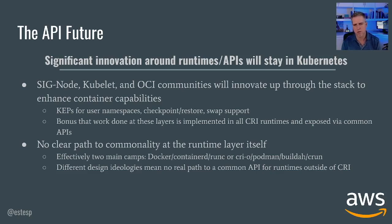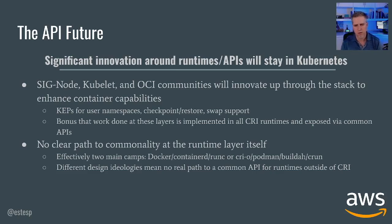There will probably never be a clear path to commonality at the runtimes themselves. At this moment you have two main camps: Docker dependent on Containerd and RunC, and Crio, Podman, Buildah, and CRUN — some other tools used in OpenShift and Red Hat customers via RHEL and other OS distros. There are different design ideologies between these two camps, and it's unlikely there will be an absolutely common API for runtimes outside of the container runtime interface layer in Kubernetes.